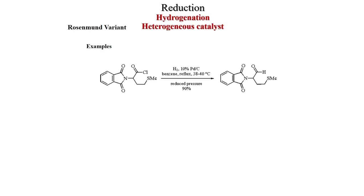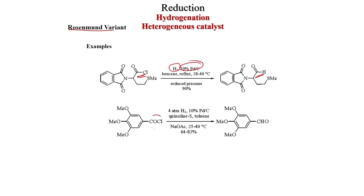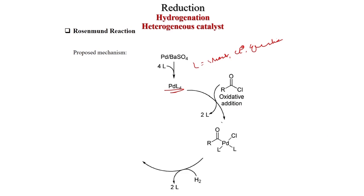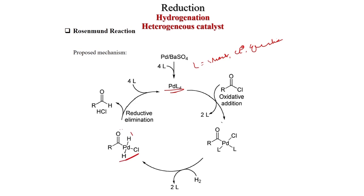Other examples of the Rosenmund variant: Pd/C is sufficient for this reaction with hydrogen to convert acid chloride to aldehyde. Also, acid chloride to aldehyde is possible with H2, Pd/C, quinoline, toluene, and sodium acetate. Mechanism: the ligand (solvent, Cl⁻, or quinoline) generates the palladium species, then oxidative addition of the acid chloride occurs to give an intermediate, hydrogen is then added, and reductive elimination gives the aldehyde and HCl.